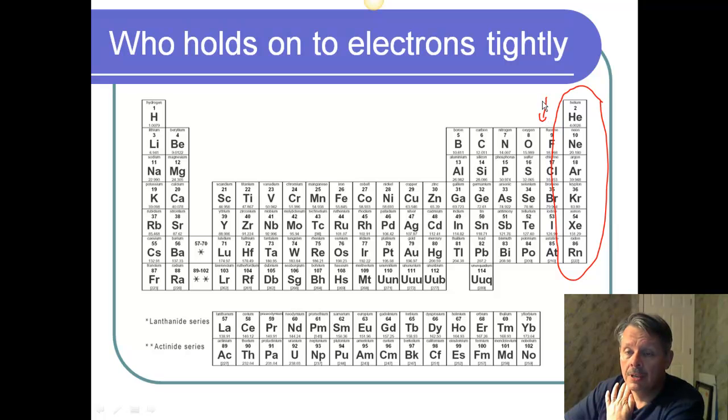Over here, we have things that hold onto their electrons very tightly, and in fact a lot more because fluorine will take on a minus one charge, oxygen minus two. That's an example that they want electrons. Whereas over here, hydrogen will take on a plus one, beryllium will take on a plus two. They give up their electrons. They're giving them up to the things on the other side. So these are held onto very loosely, and the things that are on the right are held on tightly.